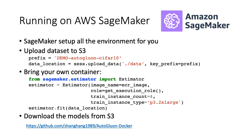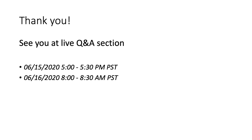If using the provided example code, after building the Docker container you can launch the training job using the example code in this slide. The workflow is: first upload the training data to S3, then call the estimator fit function to specify the number and types of training instances. After the training job finishes, the best model will be saved back to S3. Thank you very much for attending this tutorial online. Please feel free to join us during the question and answering section, and check our website for the live instructions.